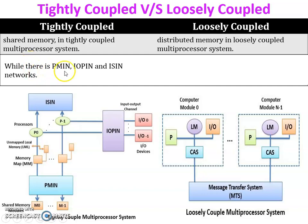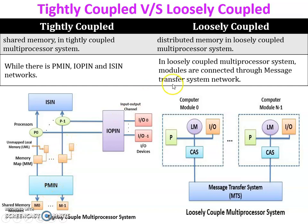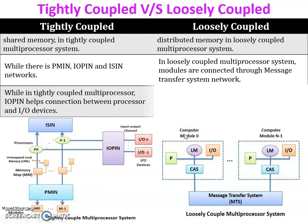In a tightly coupled system, PMIN, IOPIN, and ISIN networks are available. You can see here: IOPIN is for input/output devices, and PMIN is for processor and memory interconnection. In a loosely coupled multiprocessor system, modules are connected through a Message Transfer System (MTS) network, so each module is connected through MTS.